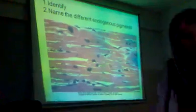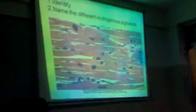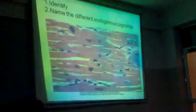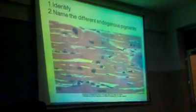Here you can see a perinuclear fine pigment. This is not hemosiderin. The perinuclear location — this is brown. This pigment accumulates in a condition that is known as brown atrophy. This is cardiac muscle showing brown atrophy.